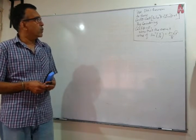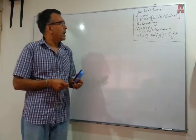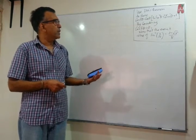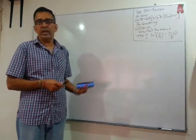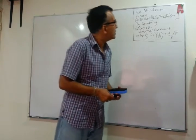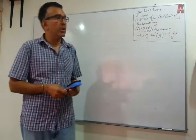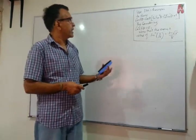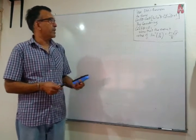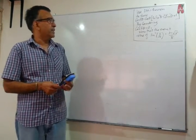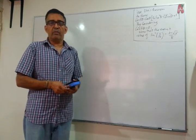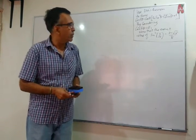The question says: use De Moivre's Theorem to show that cos5θ equals cosθ multiplied by (16sin⁴θ minus 12sin²θ plus 1). Then, you're asked to consider cos5θ equals 0 and show that the exact value of sin²(π/10) is (3 minus √5) over 8.